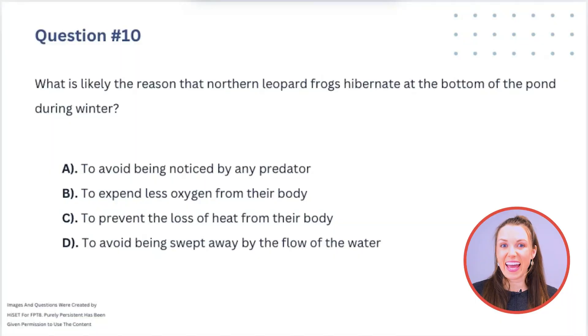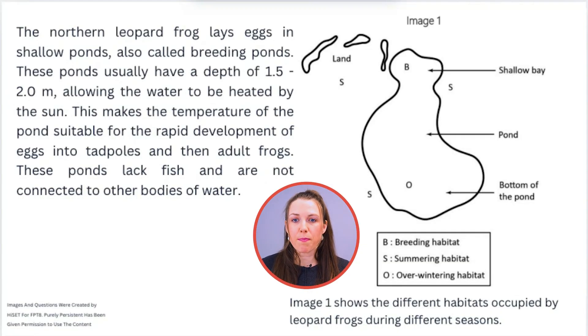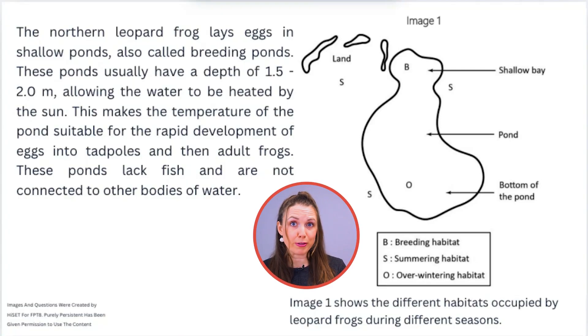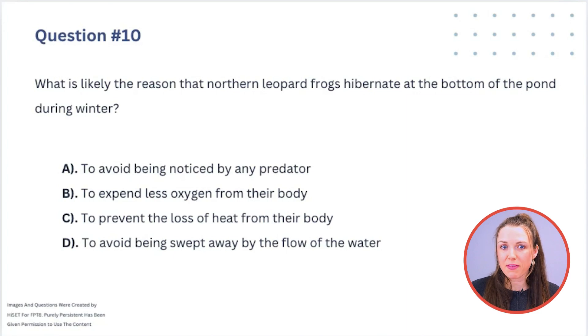Question 10: What is the likely reason northern leopard frogs hibernate at the bottom of the pond during winter? The frogs go to the bottom, which is deeper, cover themselves in mud, and stay very still. That part of the water — because of the oxygen level — doesn't freeze. They remain at the same temperature as the ambient temperature of the water and mud, and they'll be ready to go when spring comes. Answer A: to avoid being noticed by predators — are you going to notice a frog buried in mud under a frozen pond? Probably not.